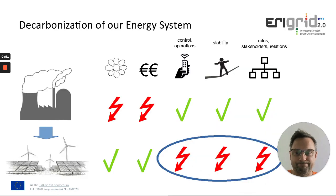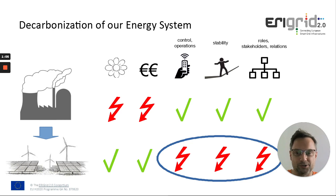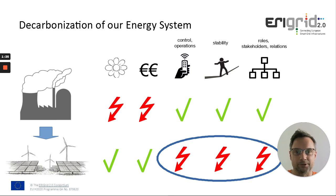Let's start with the motivation. Decarbonizing our society with renewables means that we have a generation source that is clean, no emissions. It's very cheap — marginal costs of wind and solar are basically zero. You don't have to dig for oil and then purchase it. But there are also downsides. These sources don't do what we want. We cannot turn on and off the wind and the sun as we like. With fossil generation that is possible.